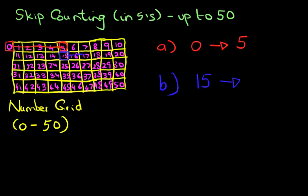we've got 1, 2, 3, 4, 5. Let's draw a circle around there. What number did we land on? We landed on number 20.